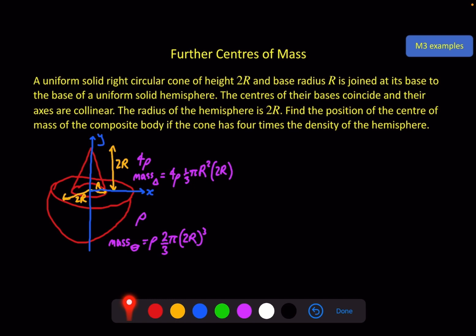The centre of mass of the hemisphere will be minus 3r over 8, but since the radius of the hemisphere is 2r in this case, it becomes minus 3(2r)/8. The centre of mass for the cone is one quarter of the height h, and we know h is 2r. Now I have all the information I need: the mass and centre of mass coordinate for both the cone and the hemisphere.